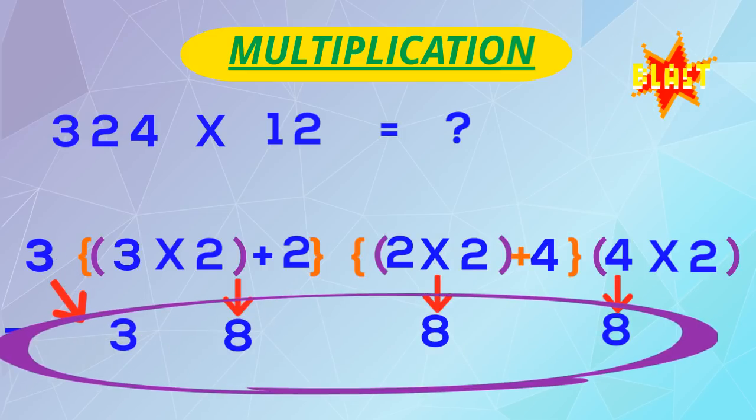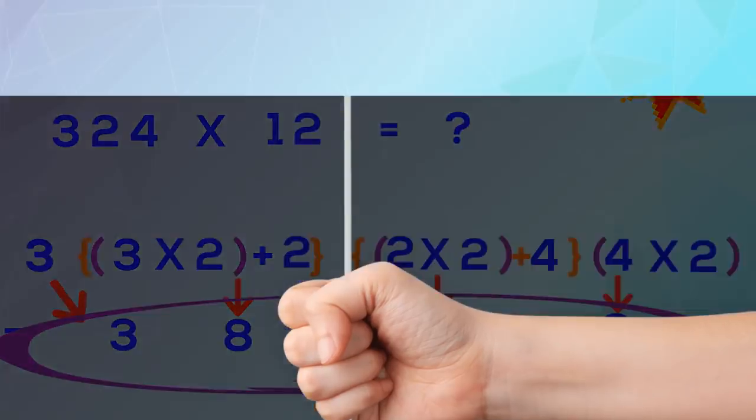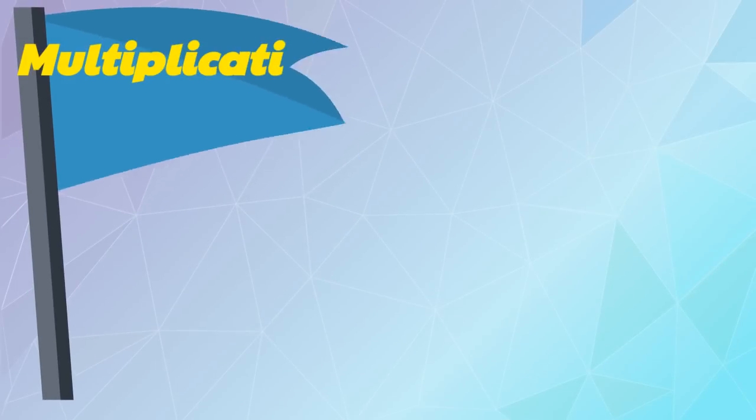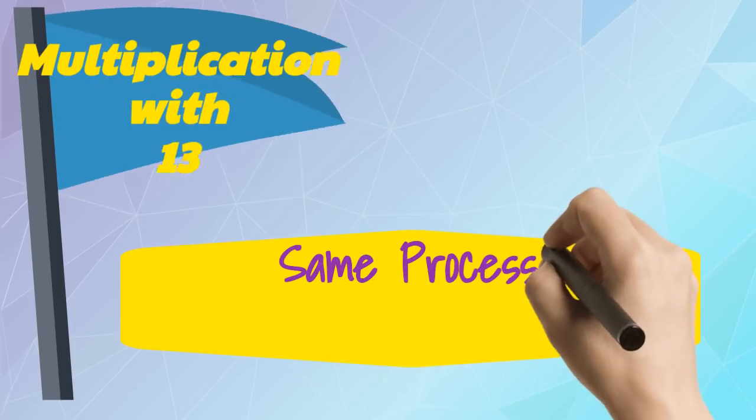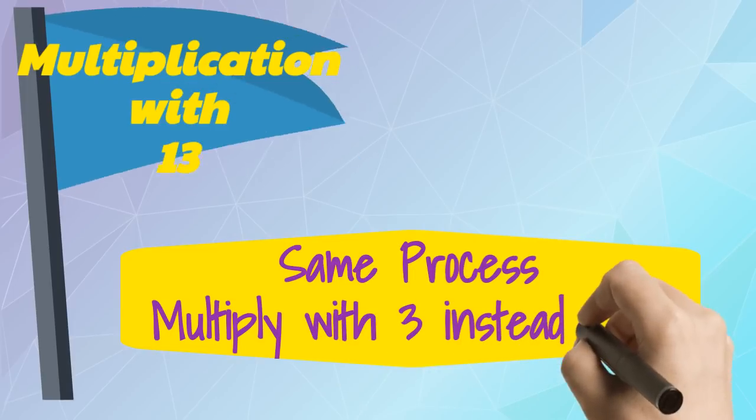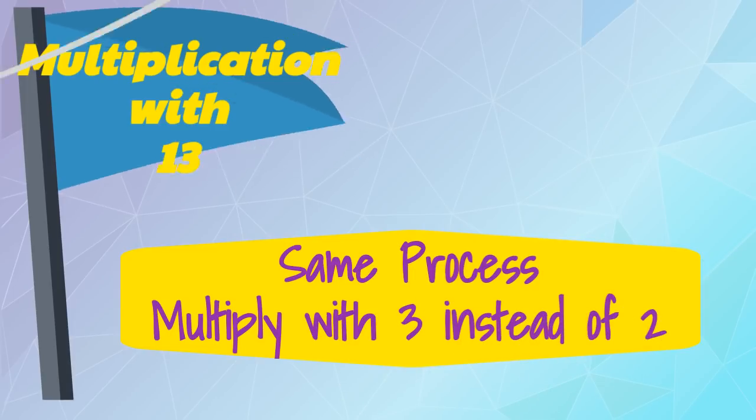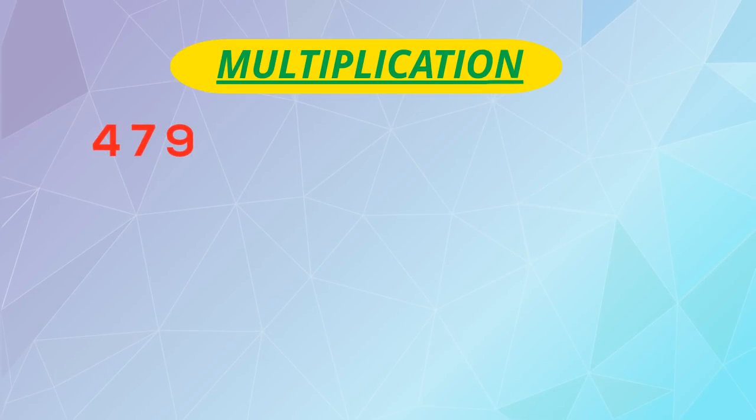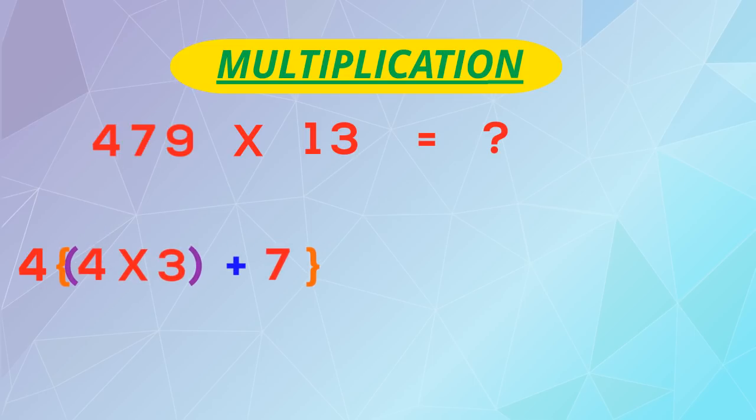Now let's move to multiplication of numbers with 13. Here the whole process will be same, only we have to multiply with 3 instead of 2. Let's take 479 and multiply with 13. First number 4 will come down, then multiply 4 with 3 and add the next digit 7 here.